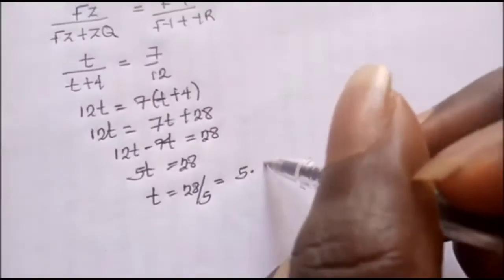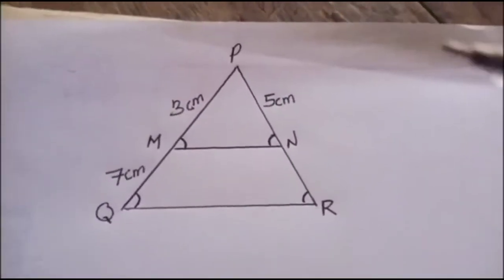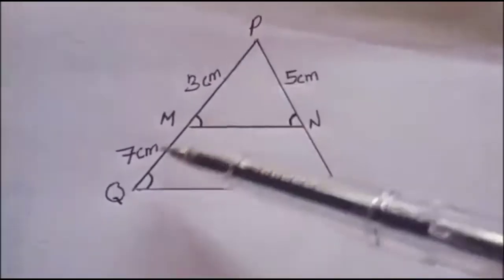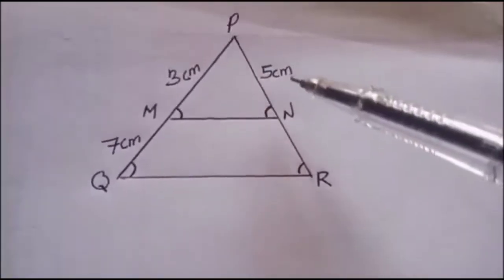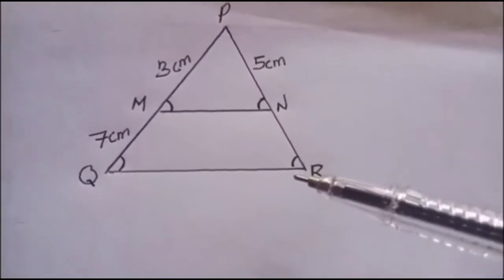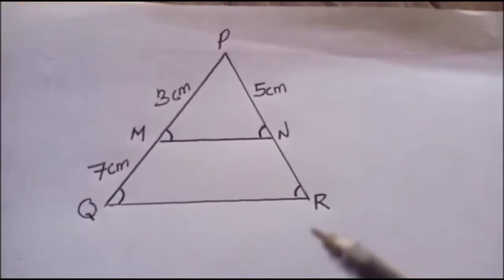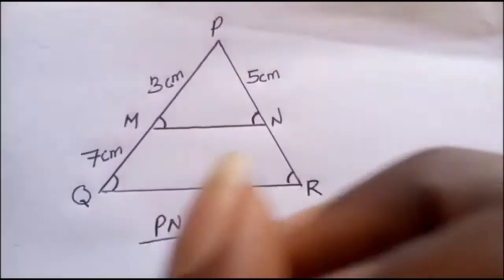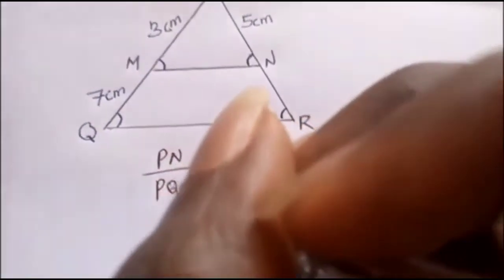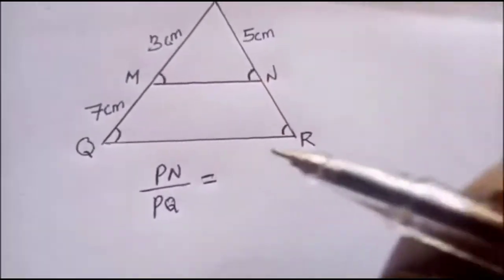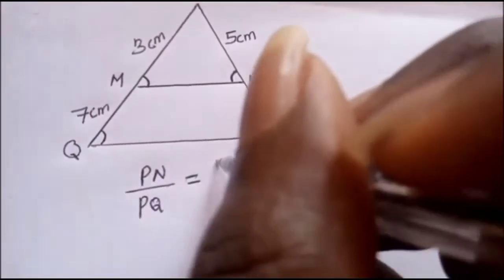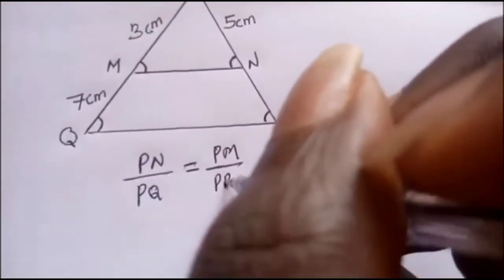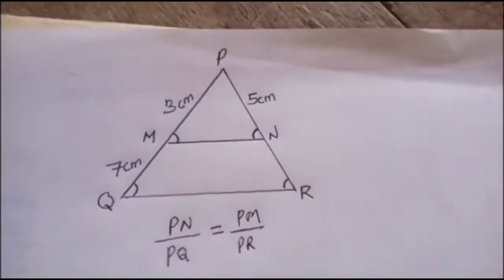Look at this diagram. I'm having label PM and PQ, likewise I'm having PN and PR. So the ratio for this diagram will be PN over PQ equal to PM over PR.